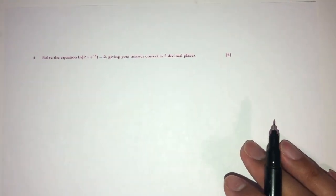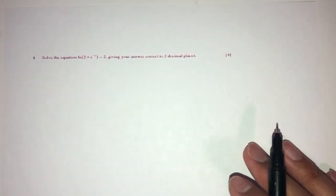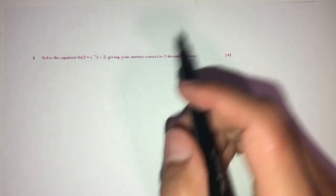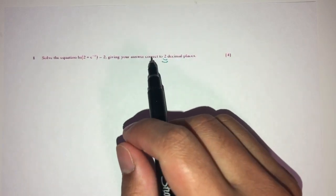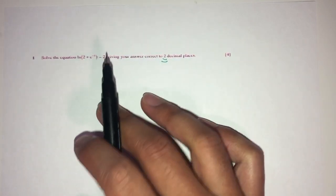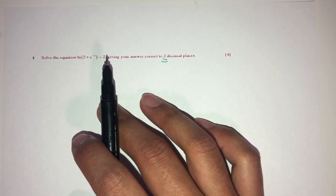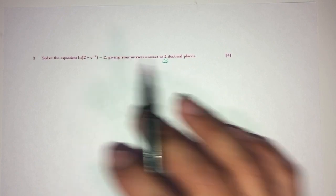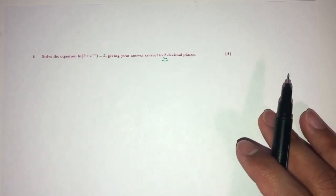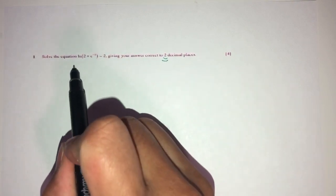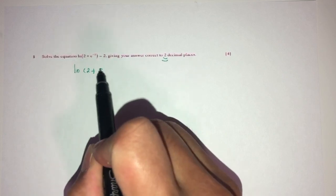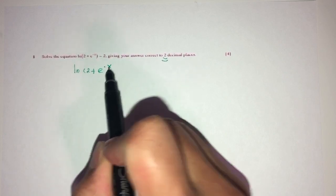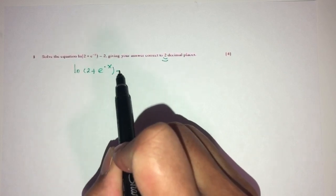Now, let's move on to question number 1. Here we have to solve the equation — give your answer correct to 2 decimal places. My apologies for the printing; I did run out of ink. We'll try to solve this step by step. We have ln of (2 plus e^(−x)) is equal to 2.